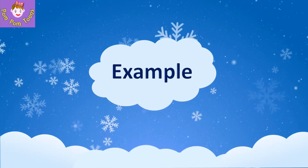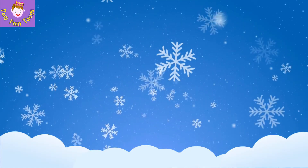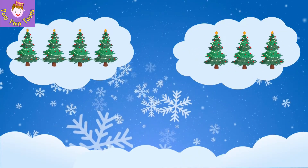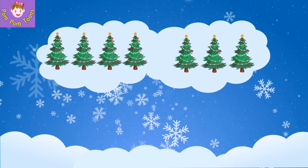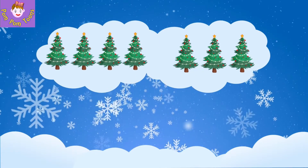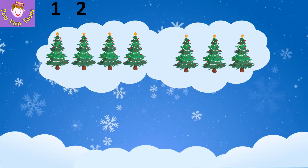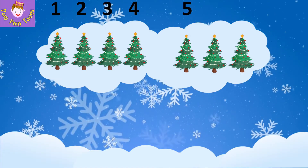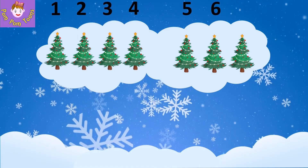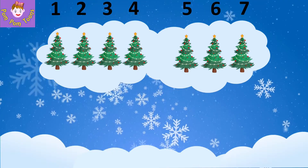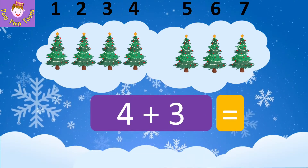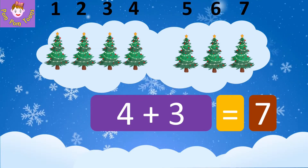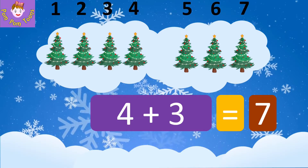We have a total of five candies. Five is called the sum of three and two. Here is another example: four Christmas trees and three Christmas trees. Put them together and count: one, two, three, four, five, six, seven. Four plus three is equal to seven.